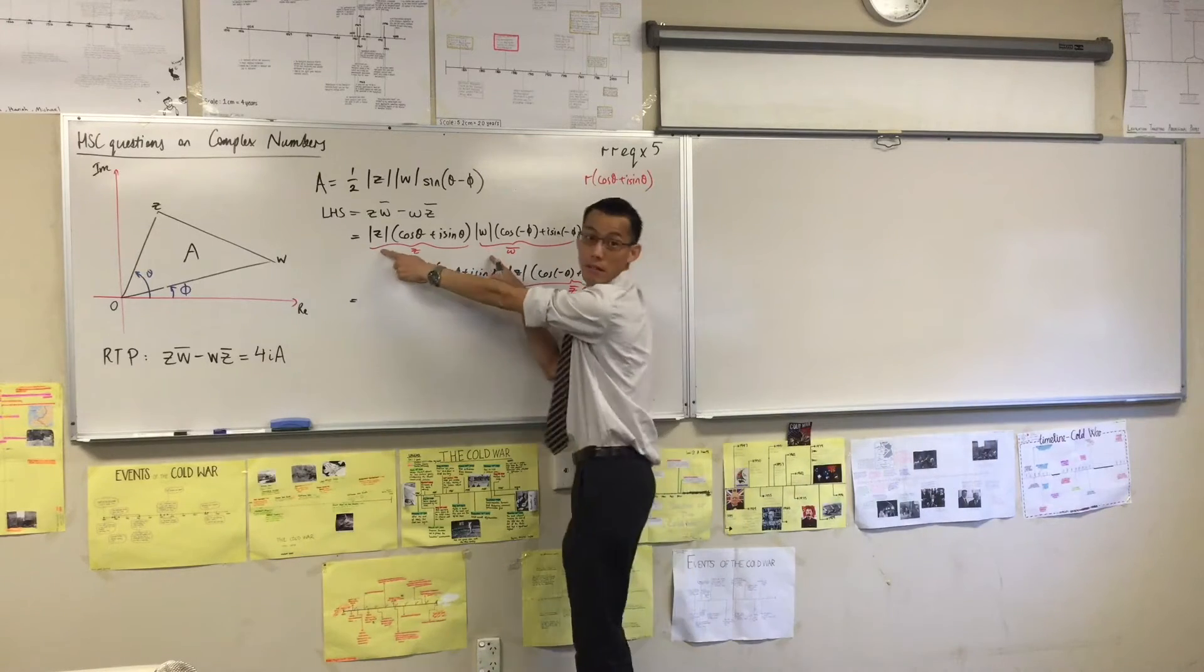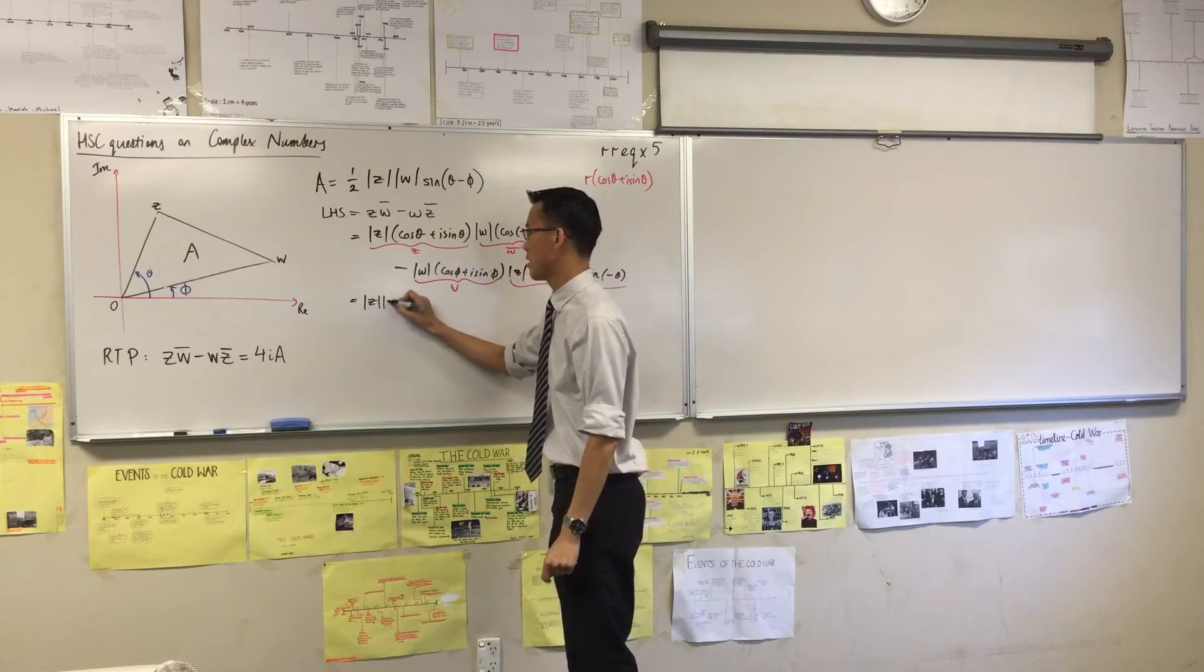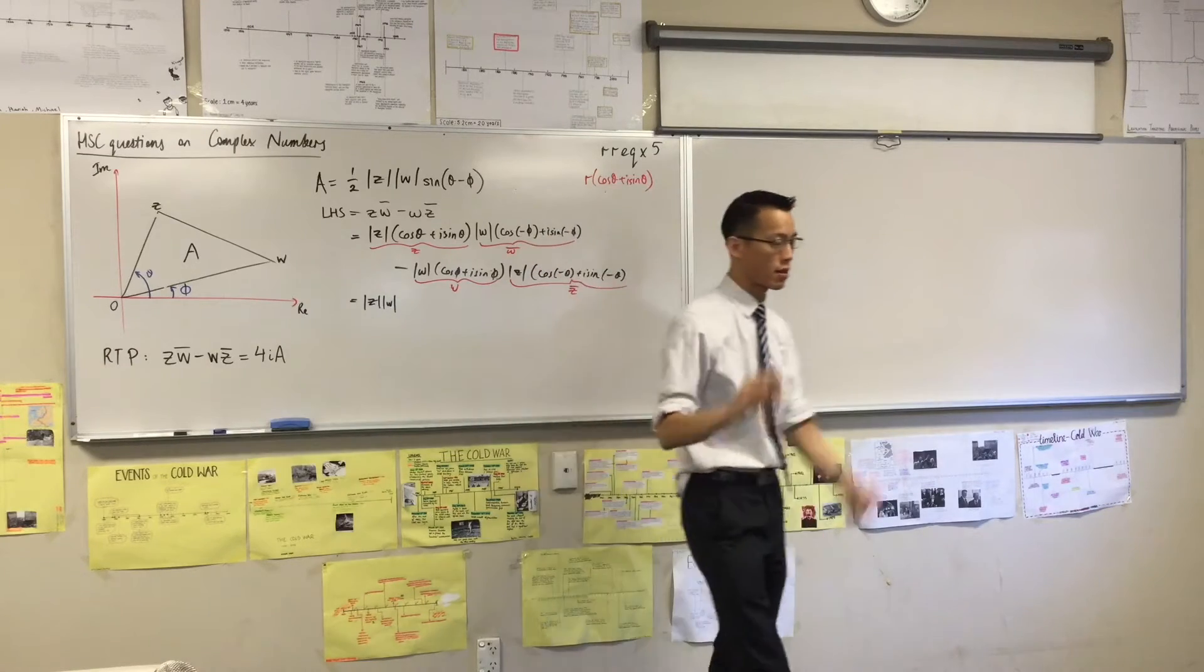So there they are, right there. So when I multiply them, I'm just going to get mod z, mod w. So I multiply the mods.